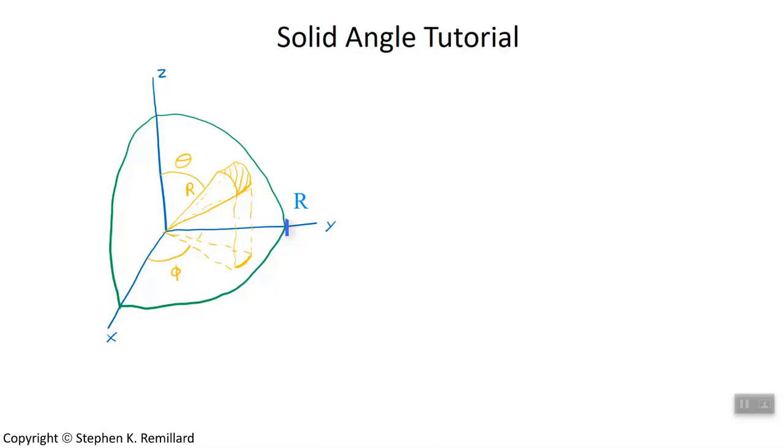This length is r sine of theta, because it's exactly the same as this length up here. I don't want to draw it in, but it's the opposite to theta up here. And so this length right here is an arc length, it's the radius r sine of theta times this angle right here, which is a small increment in phi. You know that the area of a sphere is 4 pi r squared.